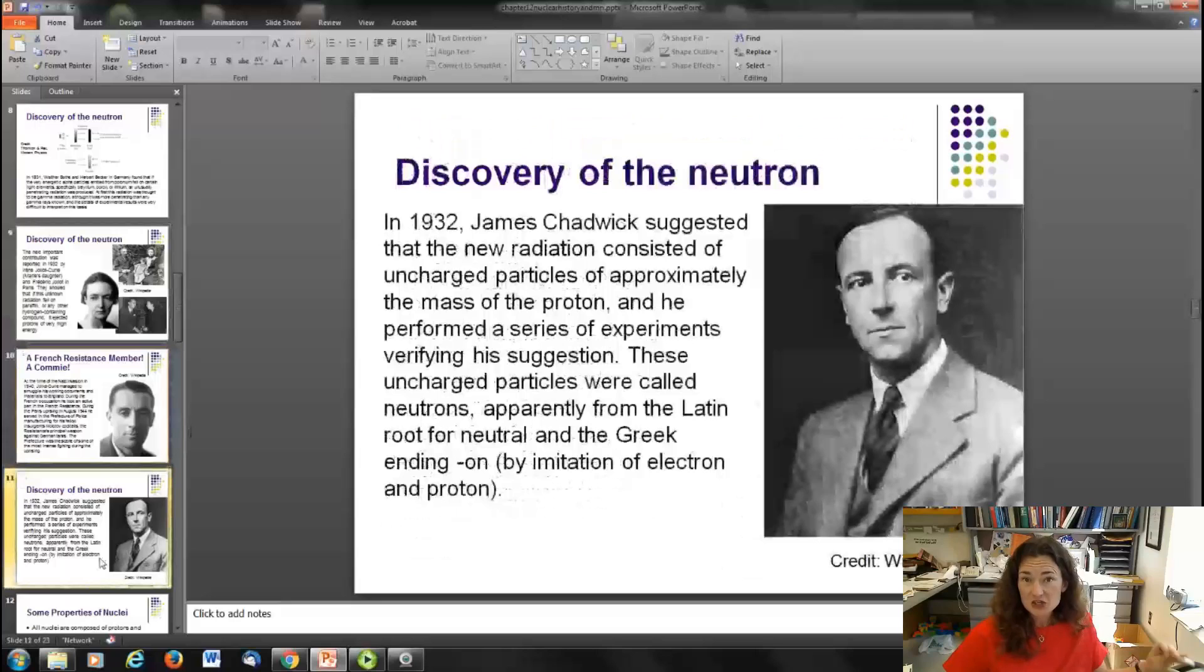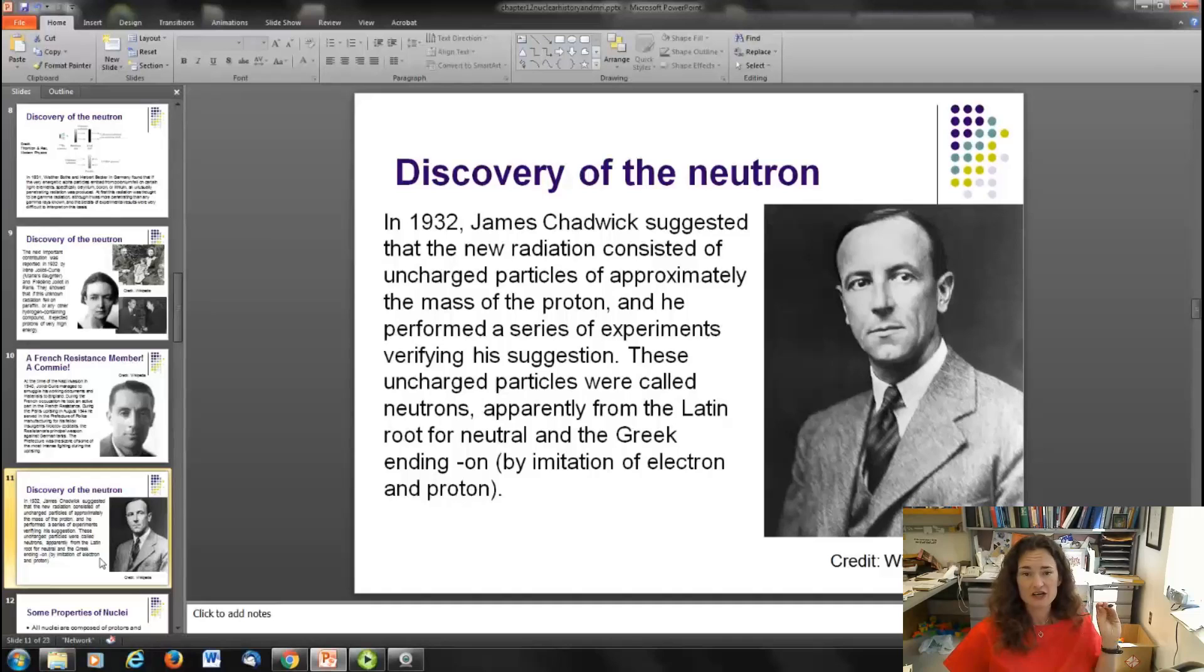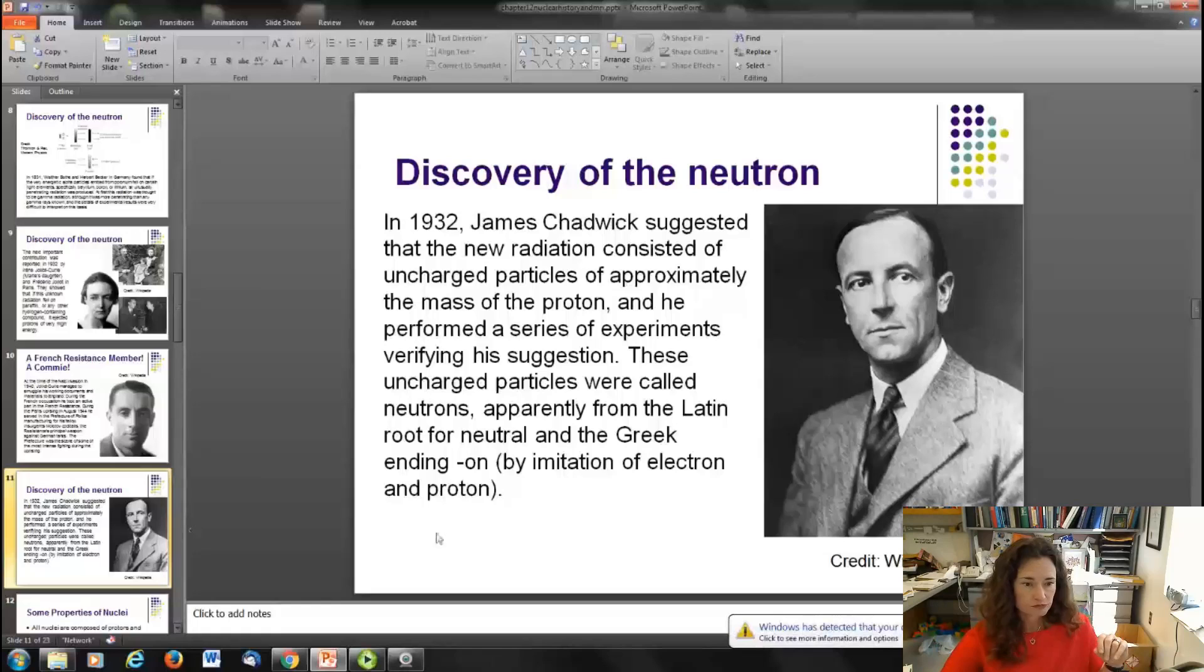Continuing on with the story of the neutron. In 1932, James Chadwick suggested that the new radiation consisted of uncharged particles of approximately the mass of a proton. He performed a series of experiments that verified the suggestion, and these uncharged particles eventually came to be known as neutrons, from the Latin or Greek word root for neutral. And then you add the Greek ending on because they already had the electron and the proton.